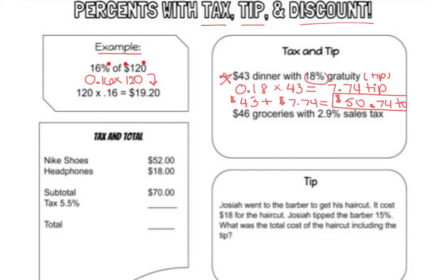Next, we have $46 in groceries with 2.9% sales tax. We want to find 2.9% of $46. Make 2.9% a decimal by moving the decimal two places to the left — that gives 0.029 — then multiply by $46 in groceries.